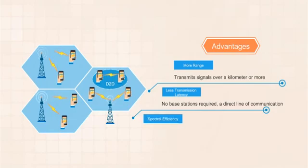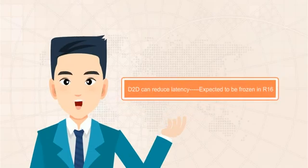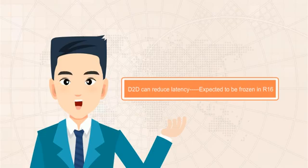High spectral efficiency. A D2D terminal reuses the spectrum resources of the cell, so the spectrum efficiency of the cell is improved. So, now you can see how D2D technology can reduce a delay. This technology is expected to be frozen in 3GPP Release 16.